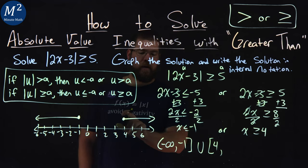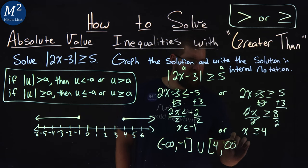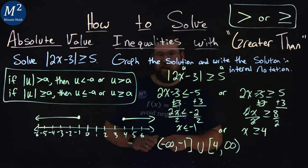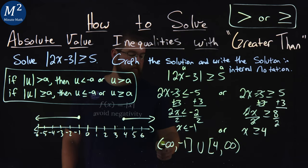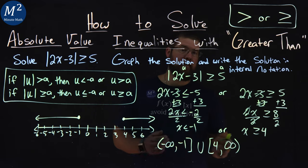...all the way to positive infinity. That number line is going to go on forever, so we have positive infinity right there. Parentheses because it's infinity. And there we have it. Our interval notation is negative infinity to negative 1 with a bracket, union, bracket 4 to positive infinity, with parentheses on the infinity sides.